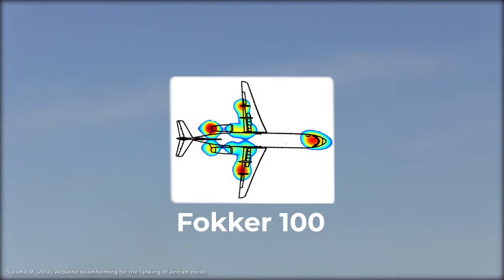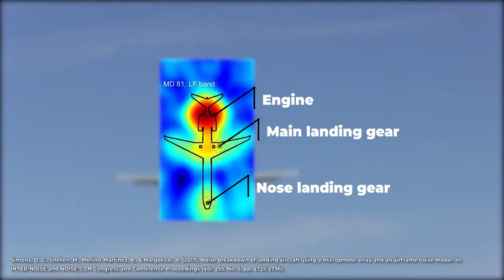But where did the noise come from? Using an acoustic imaging technique known as beamforming, researchers have been able to produce these acoustic source maps. The red blobs that you see here are the locations where loud noise is coming from. And based on these images, aircraft engines can be considered to be one of the dominant sources of noise. So let's look into how the noise is being generated in the first place.